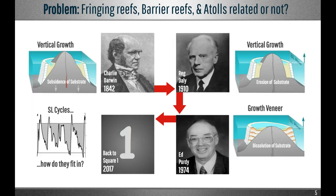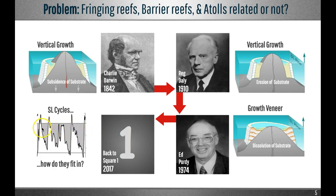Barrier reefs and atolls can't develop from Darwin and Daly's simple vertical growth mechanism, because this is inconsistent with glacial eustatic cycles — otherwise we'd have multiple concentric barrier reefs around each island. Purdy's mechanism of corals veneering karstic rims is possible, but not if reefs can grow vertically and generate their own morphology, which we know they can. So after 175 years of thinking, we're back to square one: what mechanism produces reef types during glacial eustatic cycles, and do they form an evolutionary sequence or not?